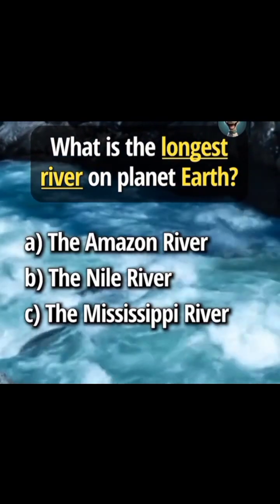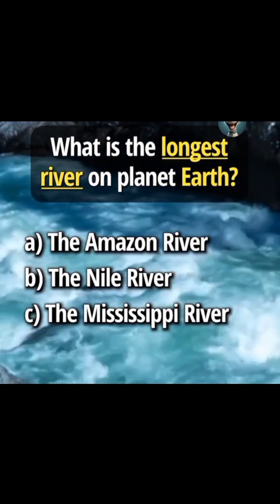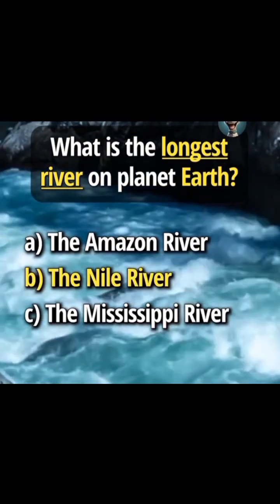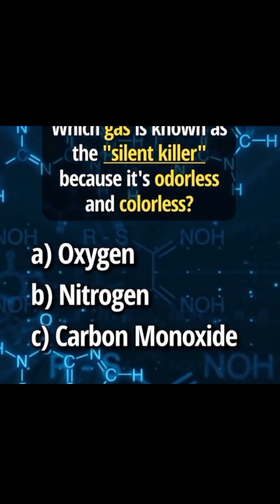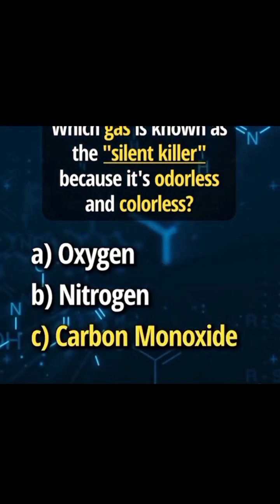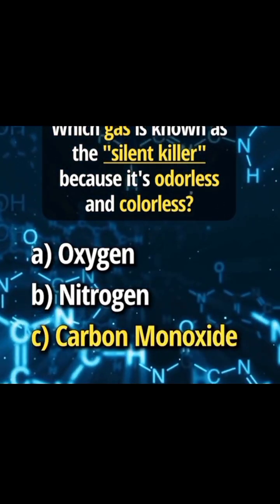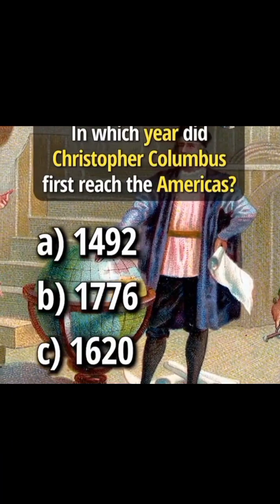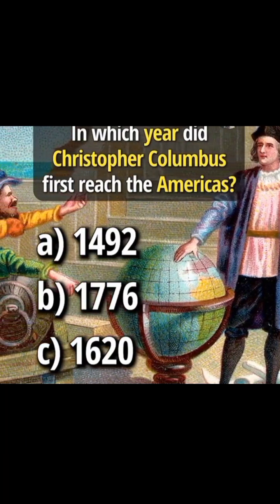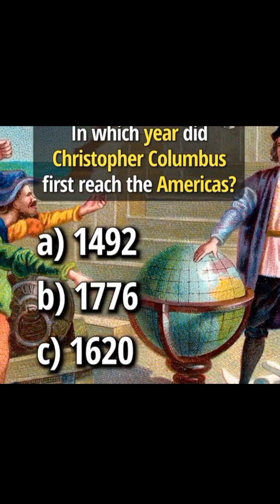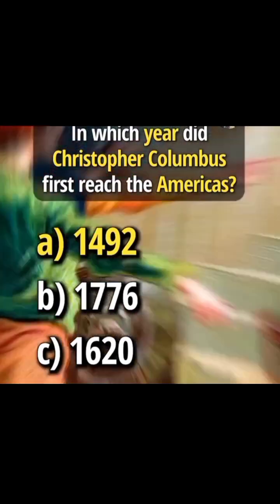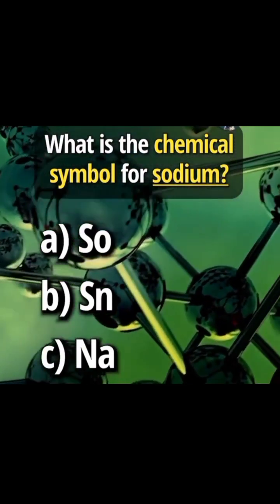Answer B: the Nile River. Answer C: carbon monoxide. In which year did Christopher Columbus first reach the Americas? Answer A: 1492. What is the chemical symbol for sodium?